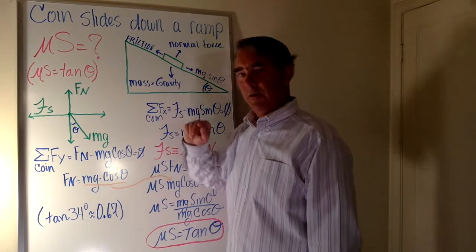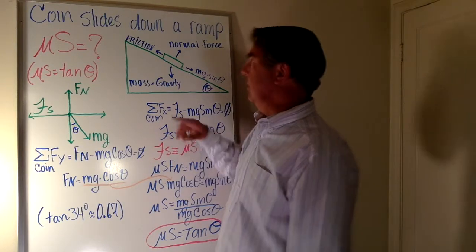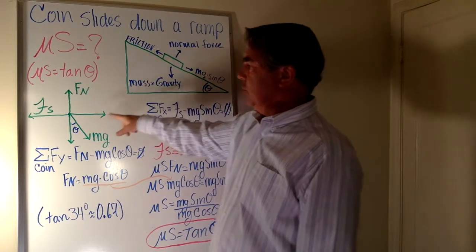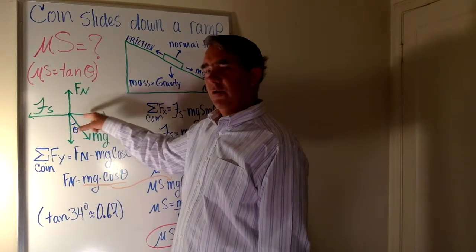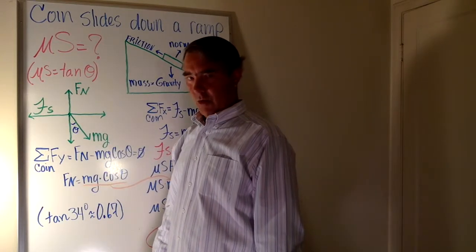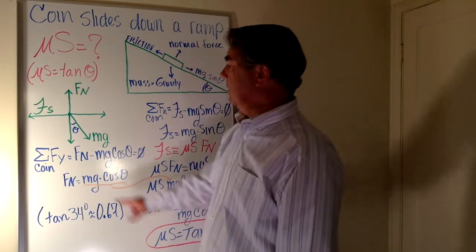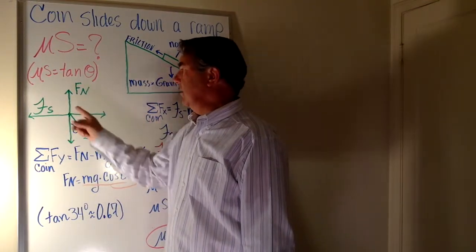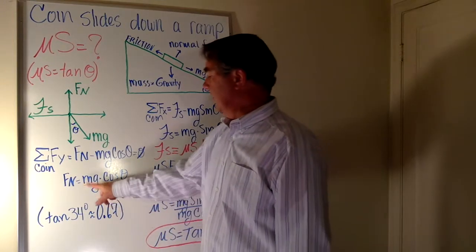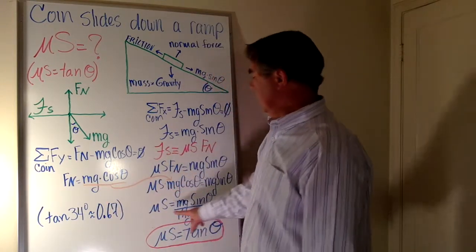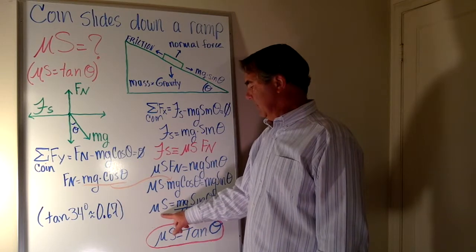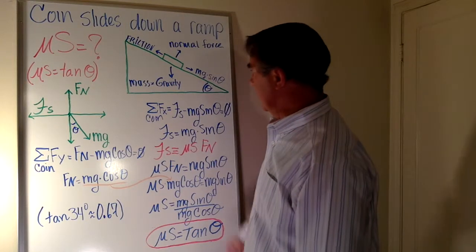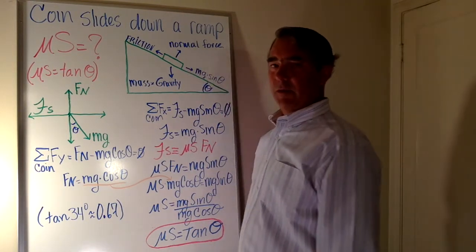The process for solving this problem is fairly standard. Draw a picture representing the problem. Draw a free body diagram illustrating the major forces in effect along the major coordinate axes. Write algebraic expressions summarizing those forces, do some algebraic substitution, isolate the objective value, and arrive at the answer — the coefficient of static friction equals the tangent of the elevation angle.